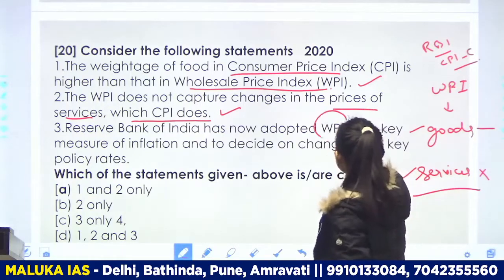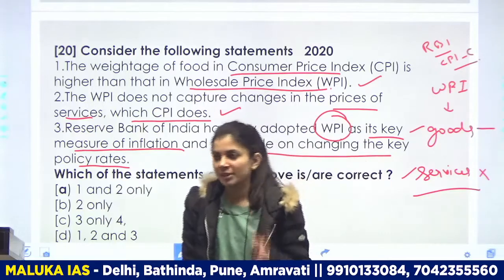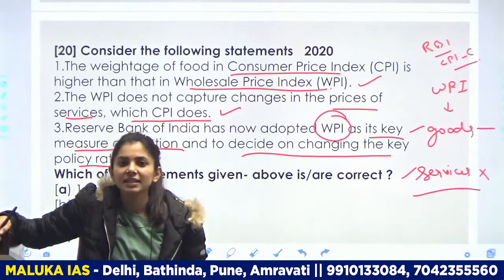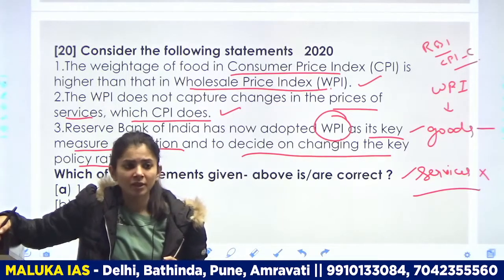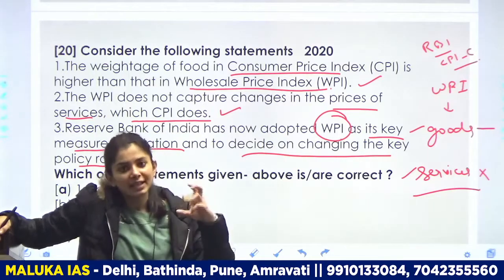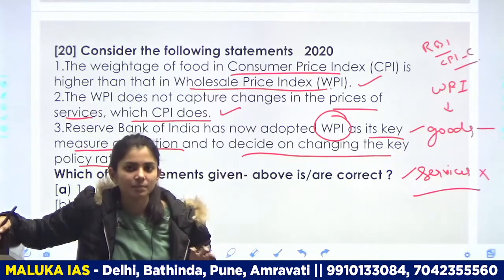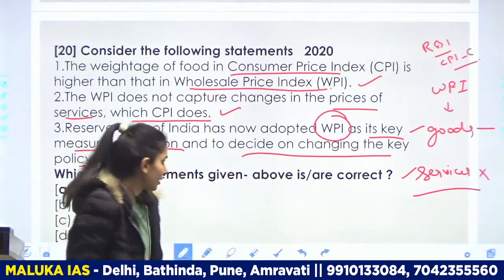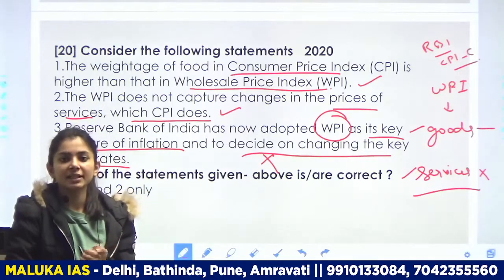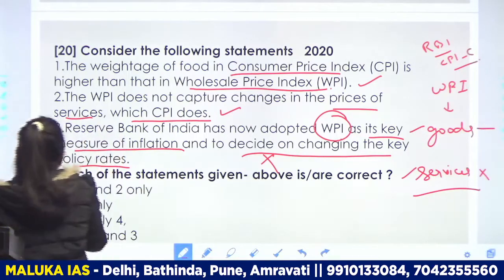Third statement: Reserve Bank of India has now adopted WPI as its key measure of inflation to decide on changes in key policy rates. Ab mujhe bataiye — RBI inflation ko measure karta hai. Inflation ka sabse zyada effect consumers par hota hai, aur consumers jo hain woh products day to day basis par retail, less quantity mein buy karte hain. Isliye agar RBI ko ek picture deni hai ki market mein inflation kaisa hai, toh woh retail price ke basis par dena chahenge, naa ki wholesale price ke basis par. Isliye third statement ho jaata hai wrong. Kyunki RBI, WPI ke basis par market ki situation nahi bataayega — WPI wholesale dealers se related hai. Hamara answer aata hai A — one and two only.